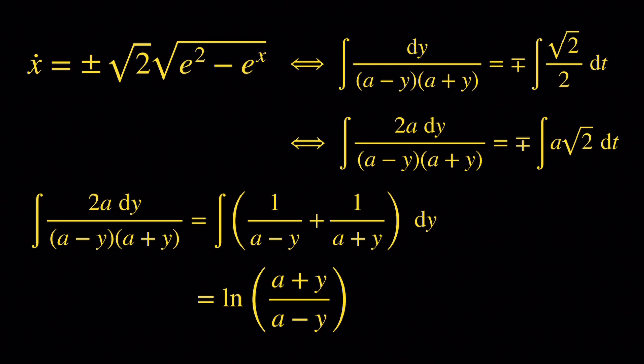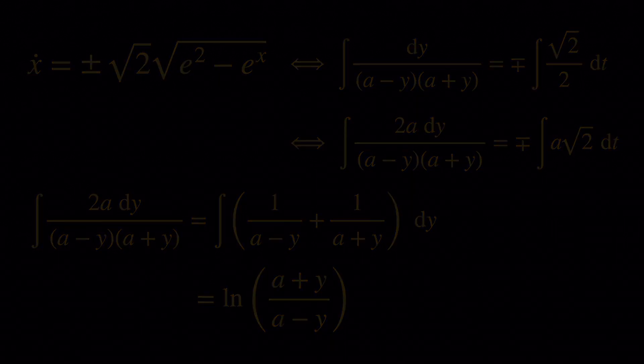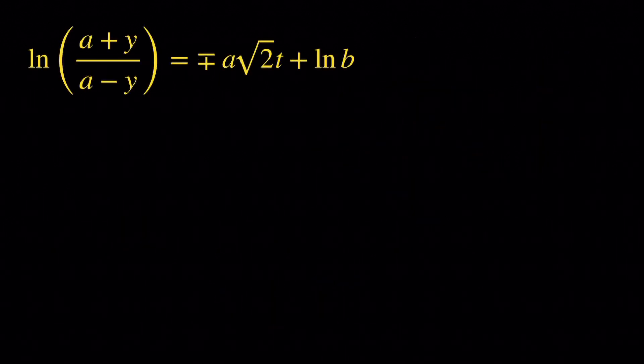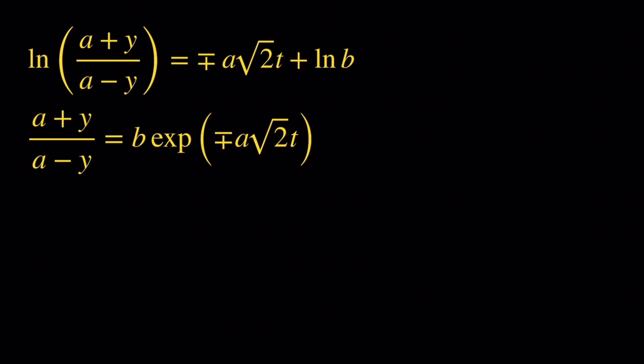If we integrate a times root 2 with respect to t, we get plus or minus a root 2 times t plus a constant of integration. We can simply write it as the natural log of b, where b is a positive number. Then we undo the logarithm by taking the exponential on both sides, and we get (a plus y) over (a minus y) equals b times exponential of plus or minus a root 2 times t.